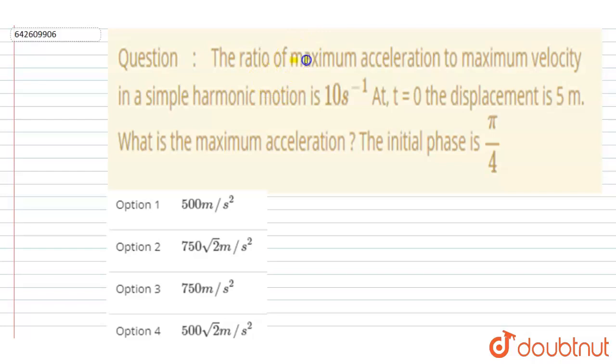...acceleration to maximum velocity in a simple harmonic motion is 10 second inverse. It is given in the question: maximum acceleration to maximum velocity ratio is 10 s⁻¹. At t = 0, the displacement is 5 meters. What is...